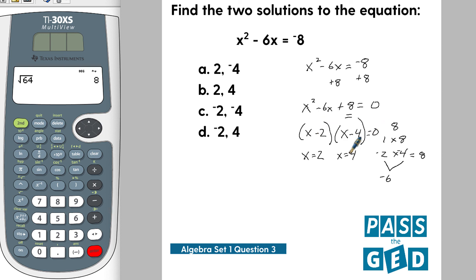In other words, when x is 2, this expression here becomes 0, which will set this equal to 0, which is what we want. Same thing here: if x equals 4 here, then this whole thing will be 0 and then the answer will be 0. So b is our answer.